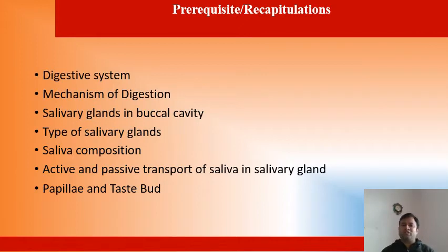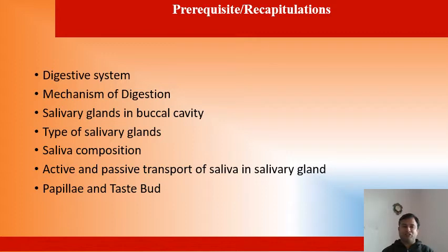We have already discussed about the digestive system in the previous lecture: the mechanism of digestion, salivary glands in the buccal cavity, types of salivary glands, saliva composition, and active and passive transport of saliva in the salivary gland and taste buds.